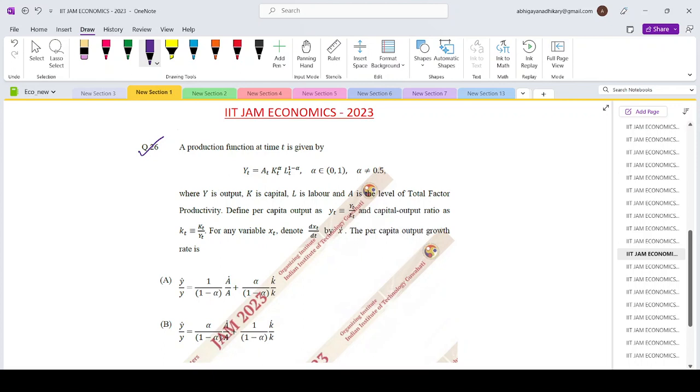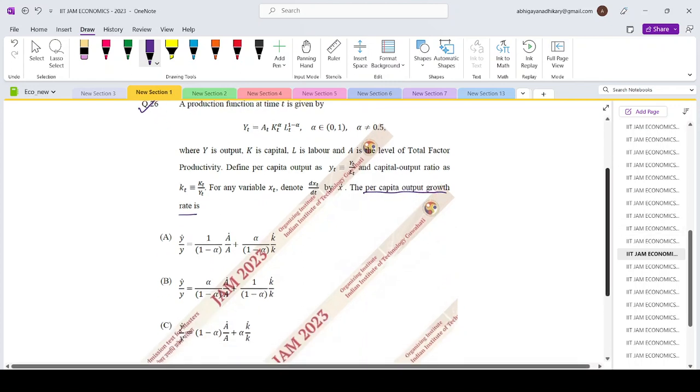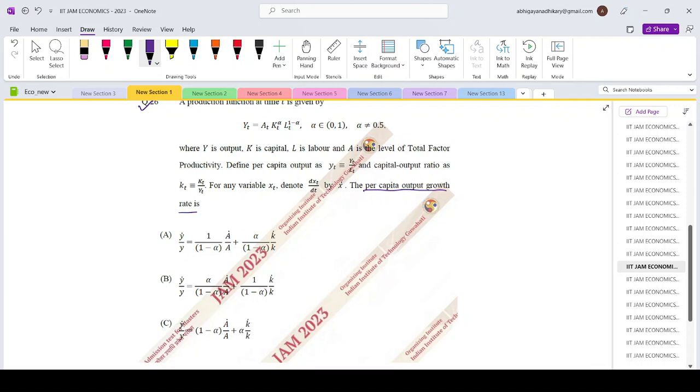We define small yt as capital Yt by Lt and the capital output ratio small kt as capital Kt by capital Yt. Then we need to find the per capita output growth rate. So let's write down the production function: Yt equals A t kt to the power alpha Lt to the power 1 minus alpha.